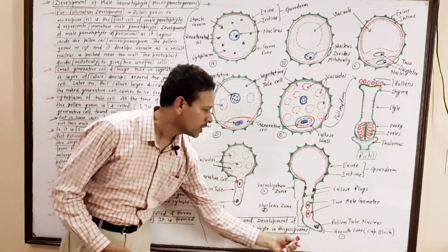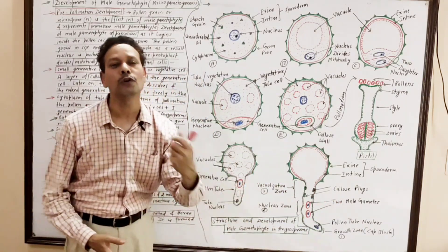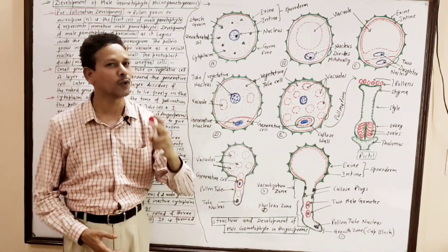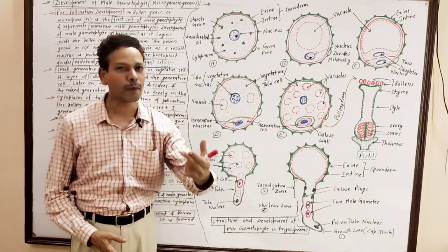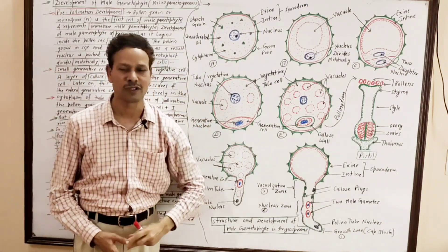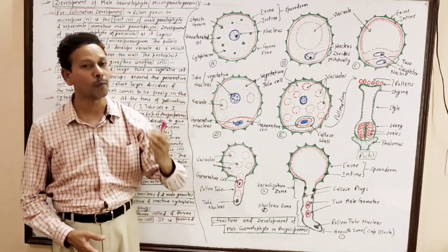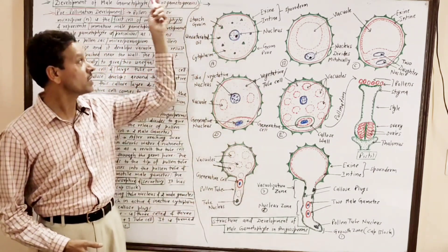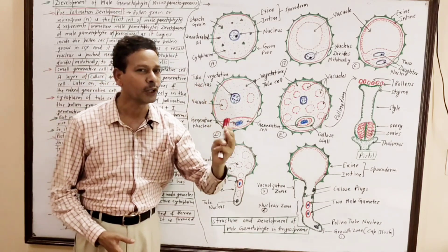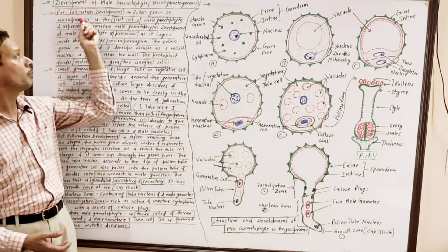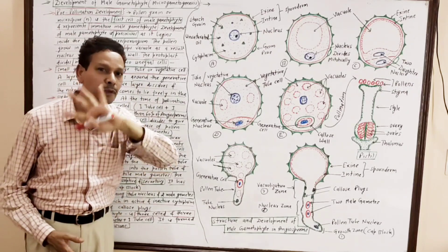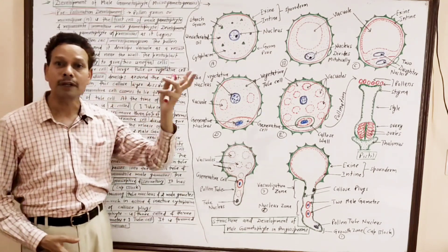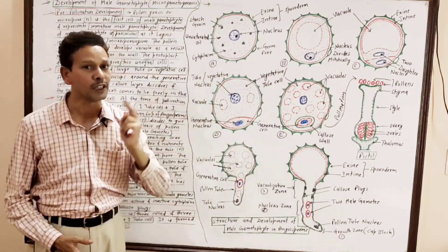In this lecture, I will explain the development of male gametophyte in angiosperms. The male gametophyte possesses two male gametes or two micro gametes. This entire process of development is named microgametogenesis — a very important topic for BSc students. This process is divided into two steps: the first step is pre-pollination development, which occurs before pollination, and the second step is post-pollination development, which occurs after pollination.